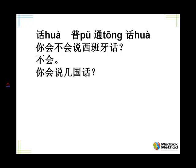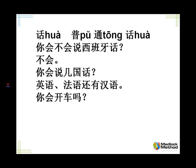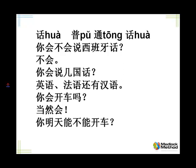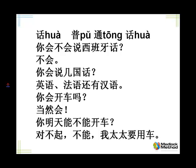Ask me: can you drive? Driving — the ability is acquired, so use 会: 你会开车吗？ Tell me, of course: 当然会. Ask me: can you drive tomorrow? Now using 能 — are you able to, given the circumstances? 你明天能不能开车？ Tell me, sorry, no — my wife wants to use the car: 对不起，不能，我太太要用车.